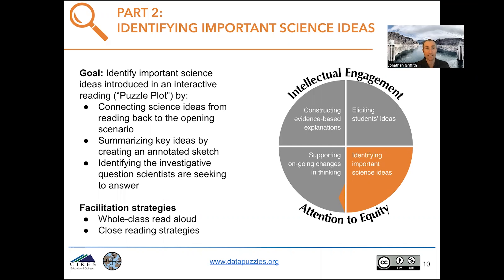We're going to help students by connecting science ideas from the reading back to those elicited during the opening scenario. We're going to challenge students to summarize these key ideas by creating an annotated sketch, which will function as their initial model for the investigative question. Then we'll have students identify and make predictions about the investigative question that featured scientist Seth Ahrens is seeking to answer.